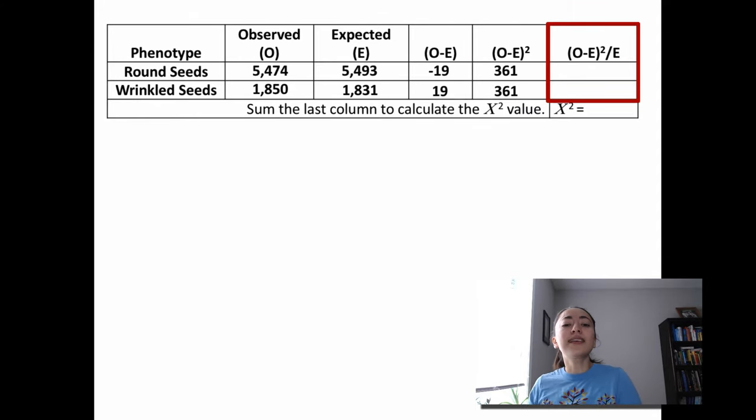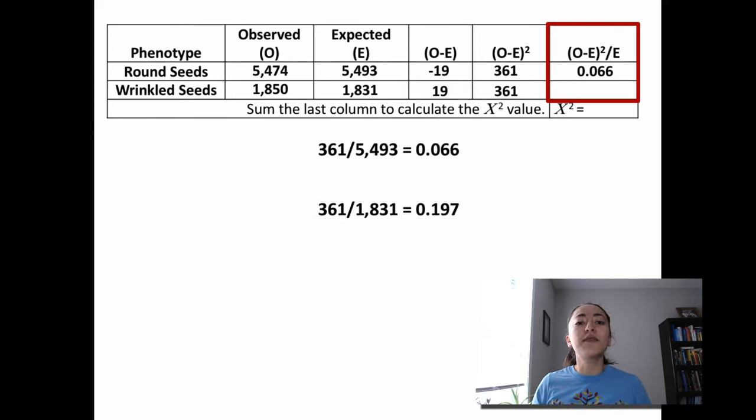Then you take the last number you calculated and divide that by the expected value for that row. So for the first row, we would take 361, divide that by 5,493 and that would equal 0.066. And for the last row, we would take 361 and divide that by 1,831 and that would equal 0.197.